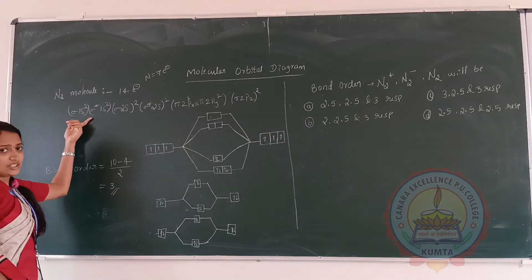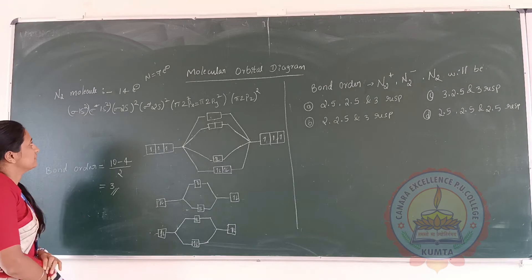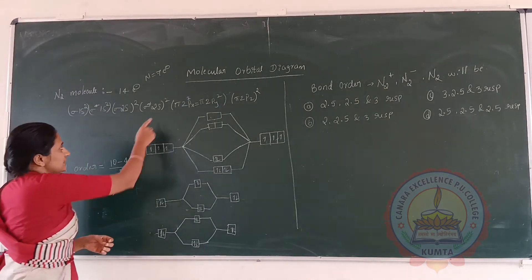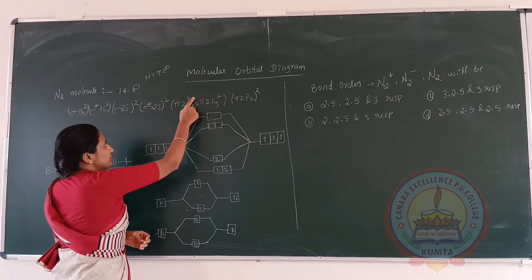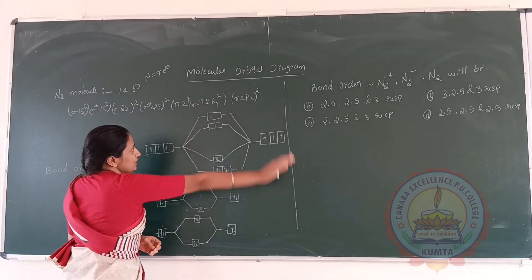We can write the electronic configuration like this: sigma 1s2, sigma star 1s2, sigma 2s2, sigma star 2s2, pi 2Px2, pi 2Py2, sigma 2Pz2.